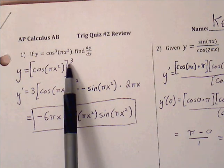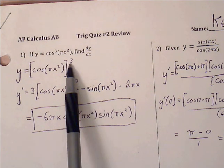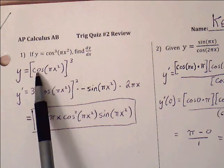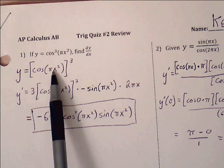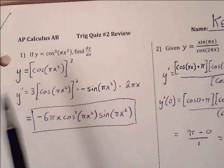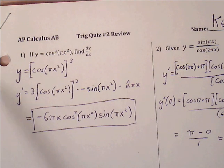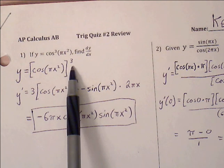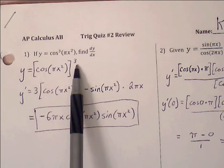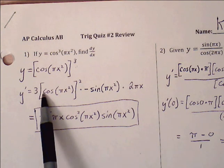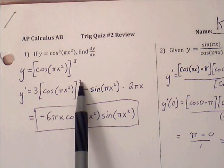Here we see there are three functions: the cubed bracket on the outside, then the cosine function, and then pi x squared inside that. We have to methodically find the derivative one function at a time. So we take care of the outermost function first — bring down the three, keep everything inside the bracket, and subtract one from the exponent.